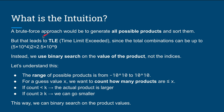The intuition is that a brute force approach would generate all possible products and sort them, but that leads to time limit exceeded. Since each array can have up to 50,000 elements, the total combinations can be approximately 2.5×10^9, which is way too slow. So we use binary search instead.